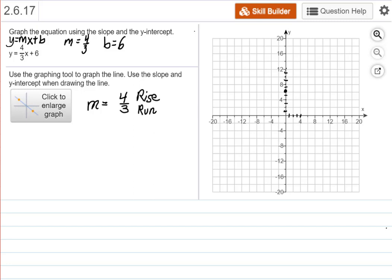Positive 4 thirds has a positive 4 on the top and a positive 3 on the bottom. Math is full of codes. A plus in the vertical direction means up. A plus in the horizontal direction means right.